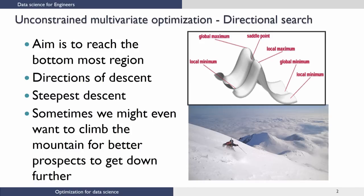Let us look at an unconstrained multivariate optimization problem. In unconstrained multivariate optimization problems, we are going to solve these using what we call directional search. The idea here is the following: if you are on the top of a mountain skiing and you are interested in reaching the bottommost point from where you are, as pictorially shown, you will see that there are several different points in this surface.